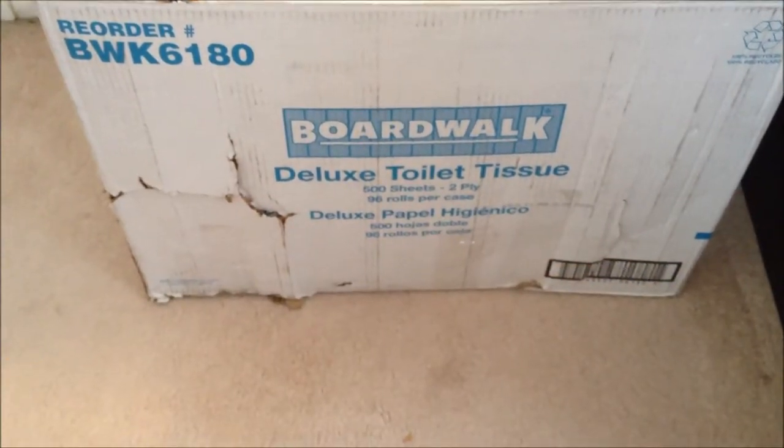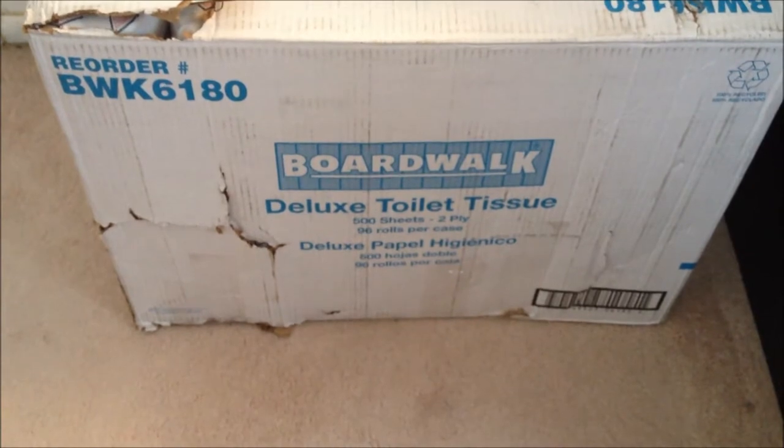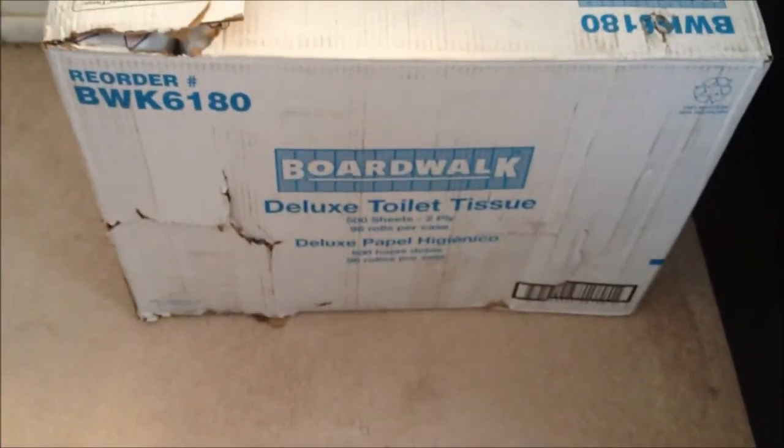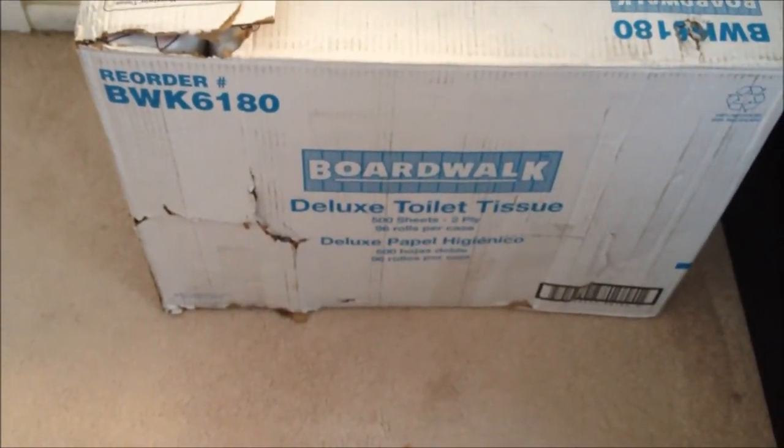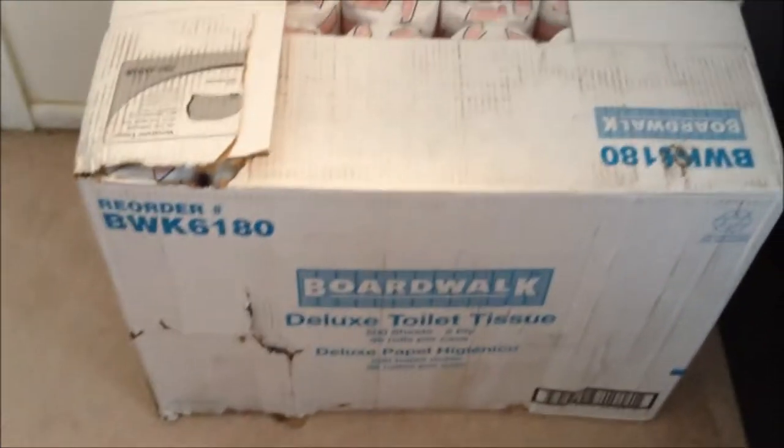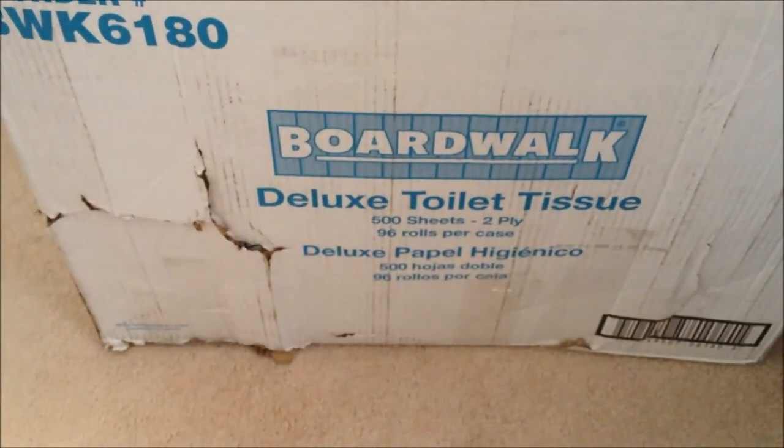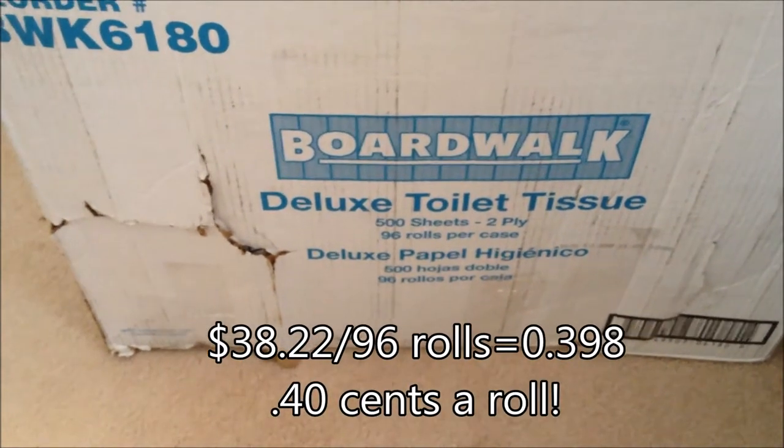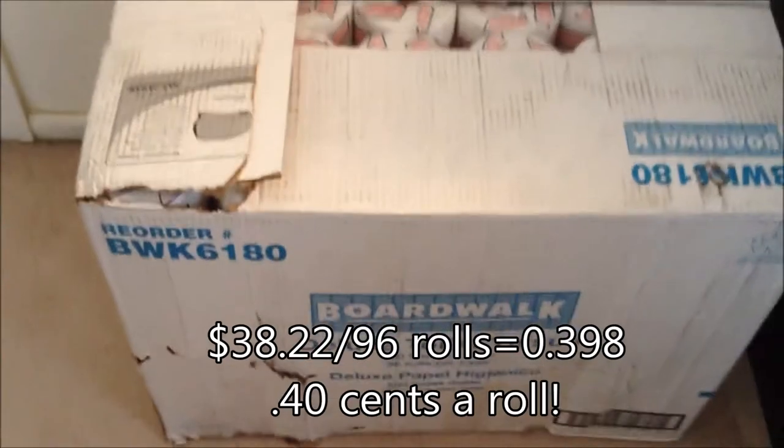All right YouTube, I got 96 rolls of toilet tissue. I know the box is kind of beat up—that's kind of my doing bringing it in the house. The box was torn on one side, but anyway, I got this Boardwalk deluxe toilet tissue, 96 rolls for $38.22 shipped to the house on Amazon.